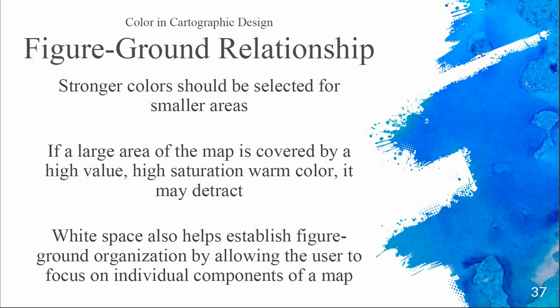White space can also help establish figure-ground organization by allowing the user to focus on individual components of a map. Breaking things up into different regions can be very helpful. Using bold or thick white outlines for different area units can be very helpful to break up intense colors — you don't want thin little white lines dividing really bold reds or blues; we need starker contrast between them.